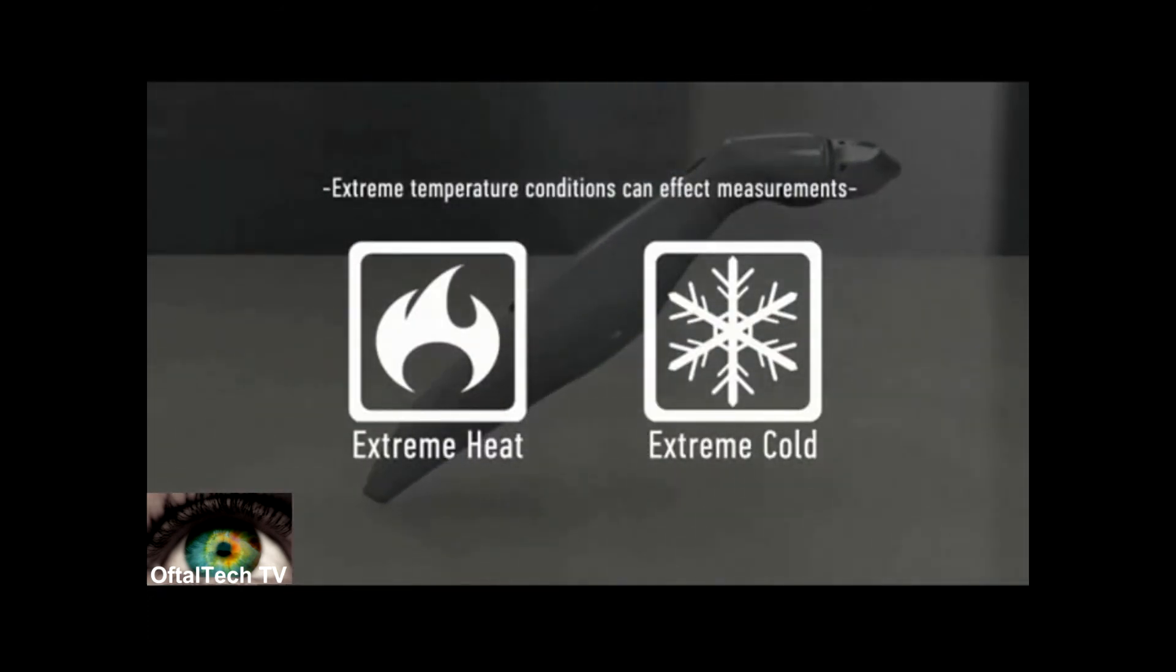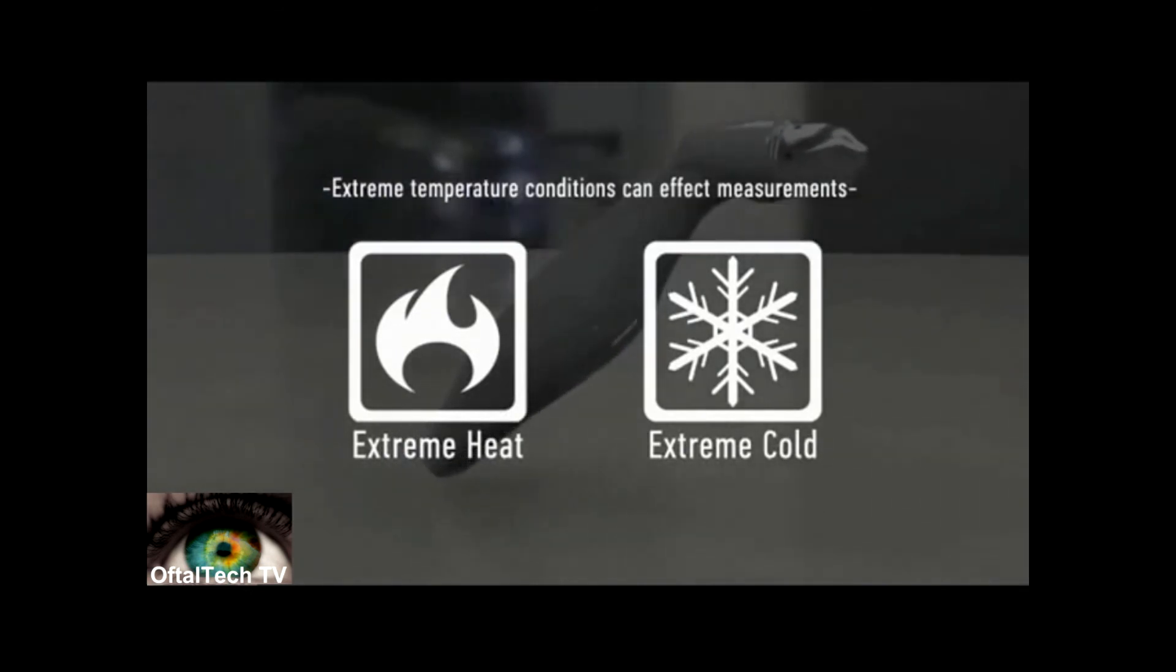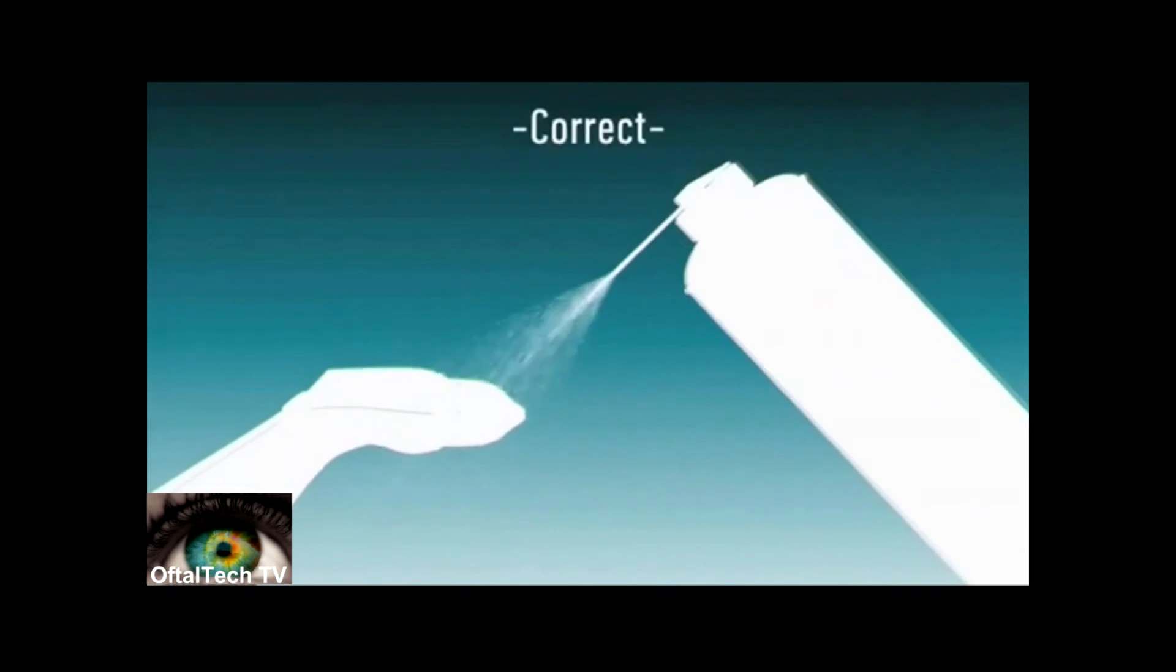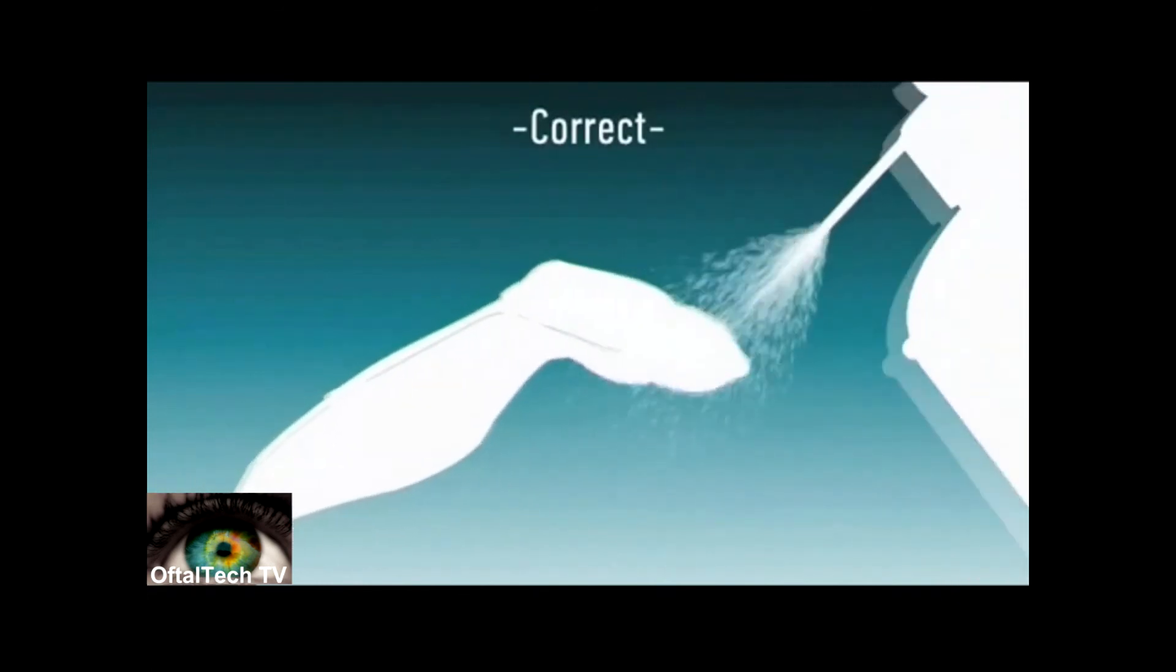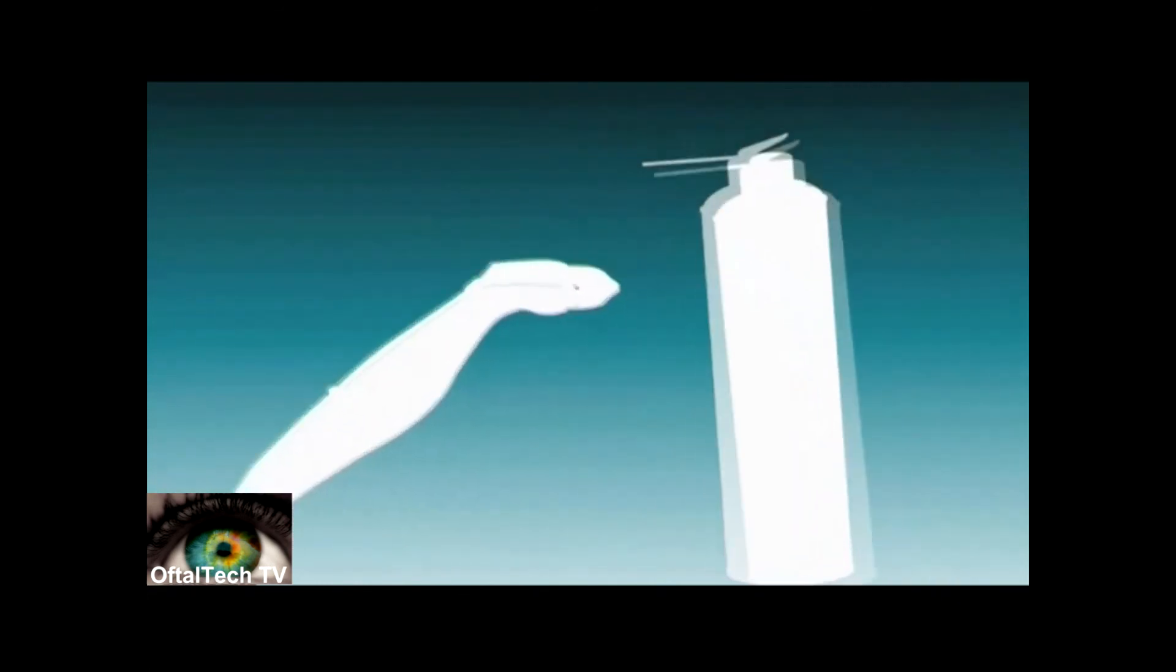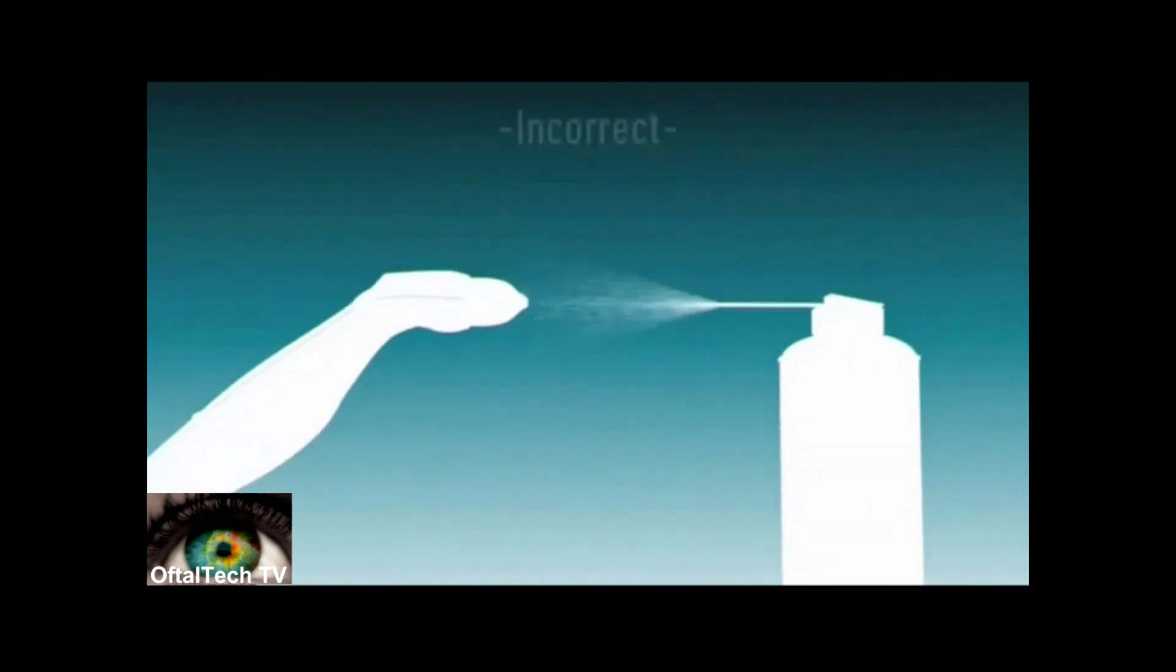Compressed air can be used to clean the tip of your AccuPen. Shoot the can on an angle at the transducer tip. Do not shoot the compressed air directly into the transducer. Do not hold the can upside down because liquid can enter the transducer tip.